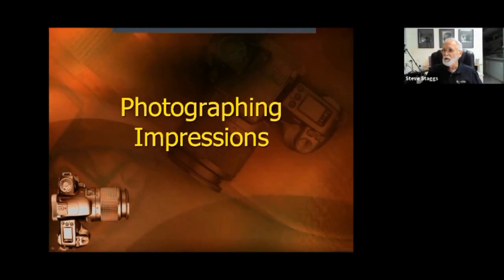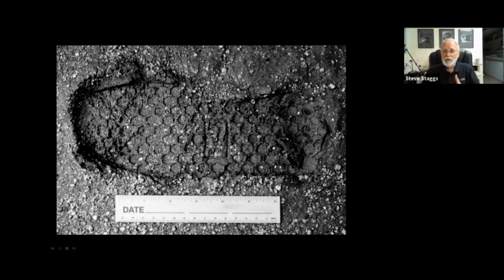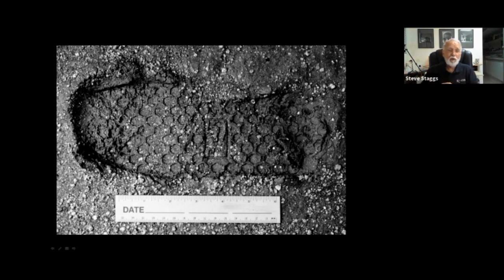We're going to look at photographing impressions now. One of the important things to keep in mind is class characteristics and individual characteristics. Class characteristics — there can be several of a similar thing all in one class. So we have shoes — that's a class of wardrobe.